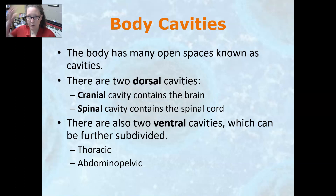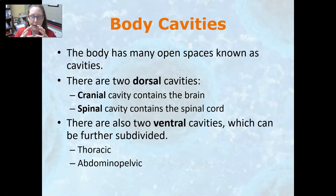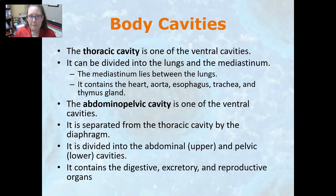The body has many open spaces known as body cavities. There are two dorsal cavities on the back: the cranial cavity containing the brain, and the spinal cavity containing the spinal cord. There are also two ventral cavities — the thoracic cavity and the abdominal pelvic cavity — separated by the diaphragm. The abdominal pelvic cavity is lumped together because it is one continuous space.